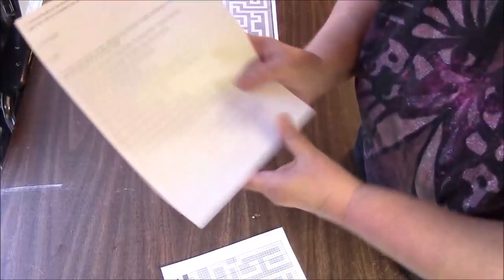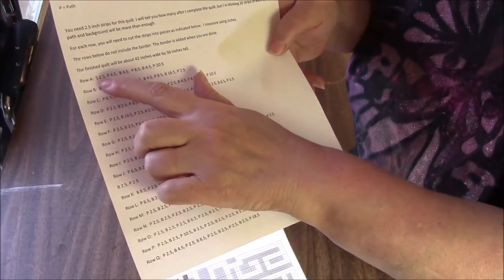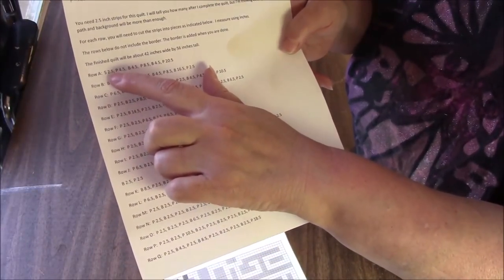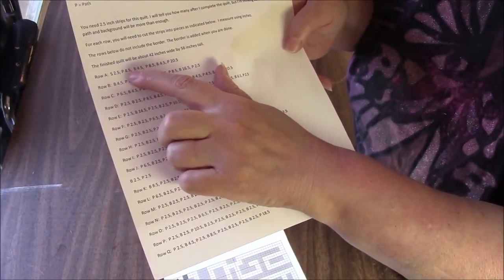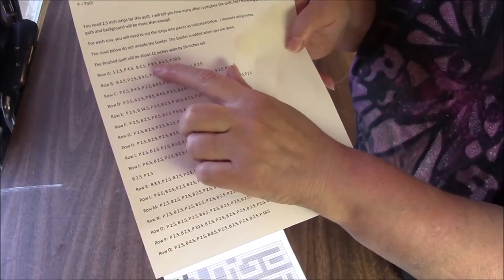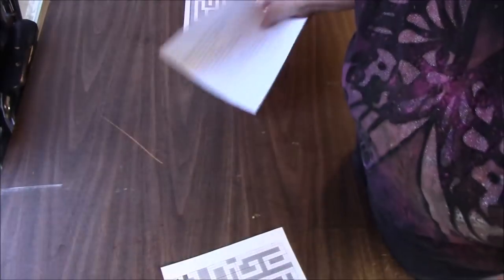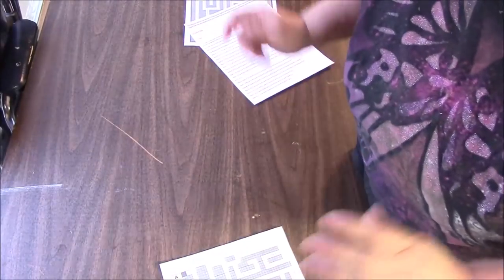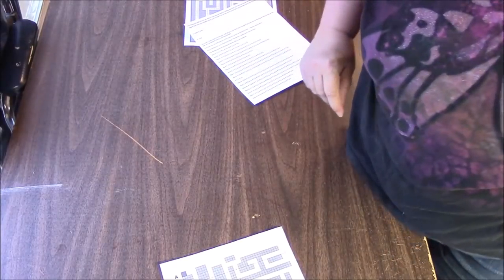This will still come in very handy because it will tell you, like for row A, you need your little start or stop and you need a path piece, then you need a background piece, a path piece, background path, and it tells you what size. So you can just pick from your little piles that you made and put these things together. So I'm going to start cutting.